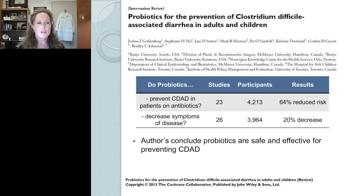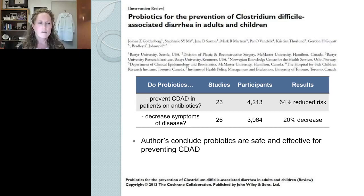A Cochrane review published in 2013 asked whether probiotics prevent C. difficile-associated infection in patients on antibiotics. In their meta-analysis of 23 studies and over 4,000 participants, they showed a 64% reduced risk of patients on antibiotics getting C. difficile infection, and a 20% decrease in symptoms of C. difficile infection in nearly 4,000 participants. Based on this analysis, the authors concluded that probiotics are safe and effective for preventing C. difficile-associated disease.